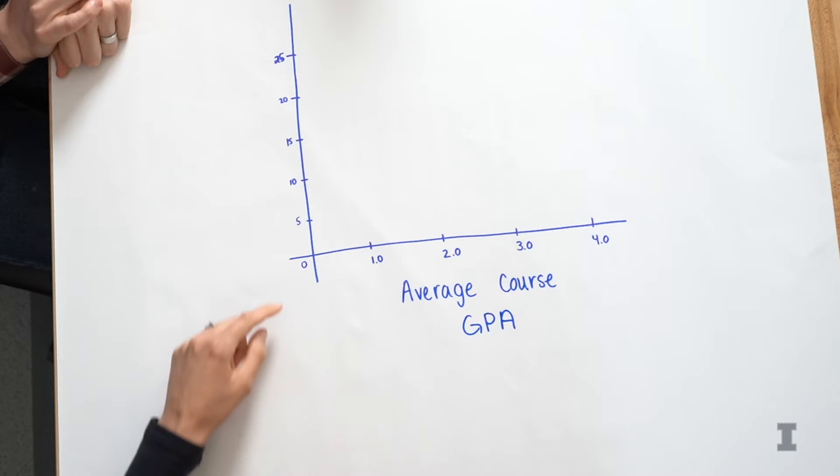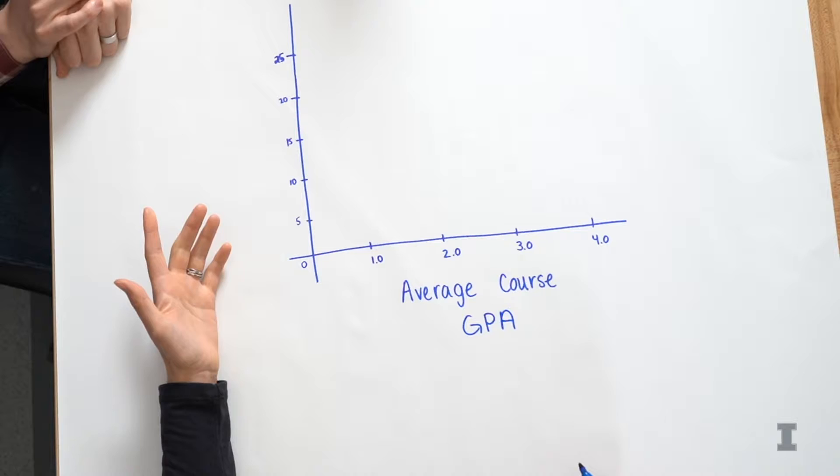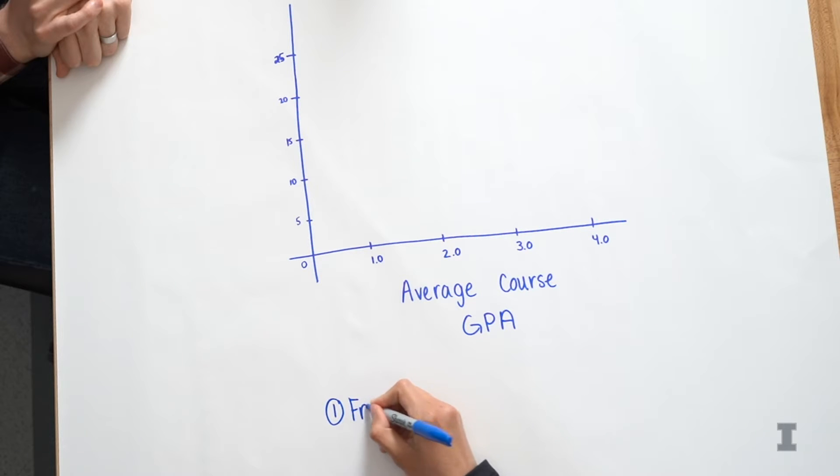And then the y-axis of a histogram actually depends on what type of histogram we're working with. So there's two types of histograms that we're going to talk about in this series. The first one is called a frequency histogram.